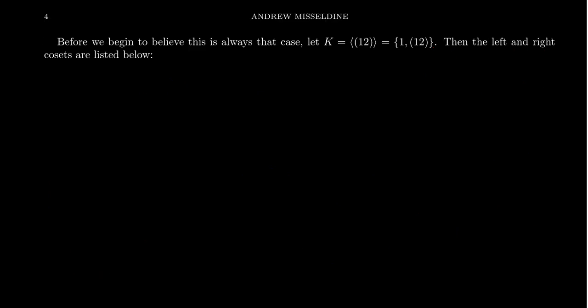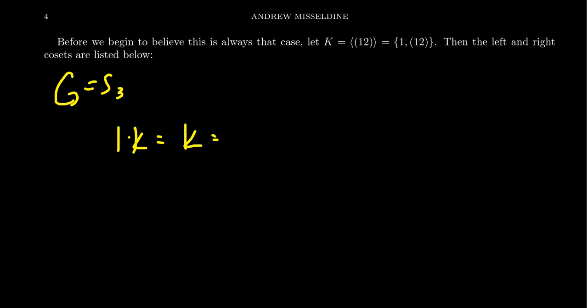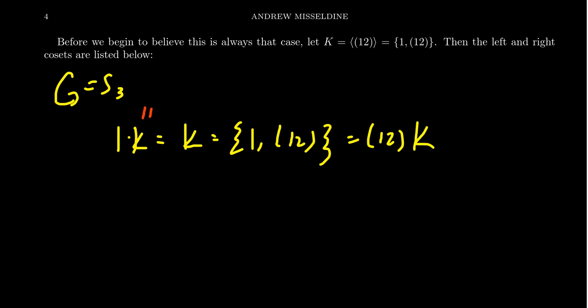Let me show one final example. G is still the symmetric group S3, but this time take the cyclic subgroup K generated by (1 2), so K = {identity, (1 2)}. Taking the identity times K gives just K itself. Taking (1 2) times K also gives K. Since the identity commutes with everything, K times the identity and K times (1 2) are also equal to K in those cases.